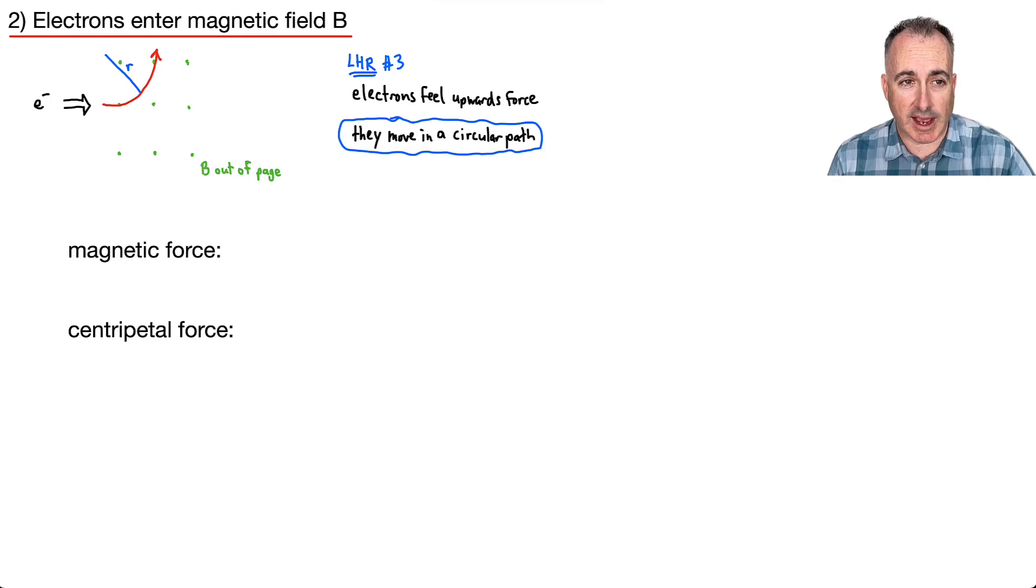Let's consider the different forces acting on this electron. Maybe I'll write the magnetic force in blue and the centripetal force in yellow. Magnetic force: we have an equation for that, F equals QVB. It's sine theta, but because these are 90 degrees, this is just 1.